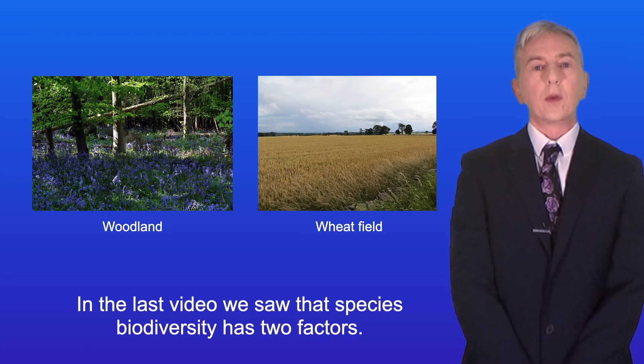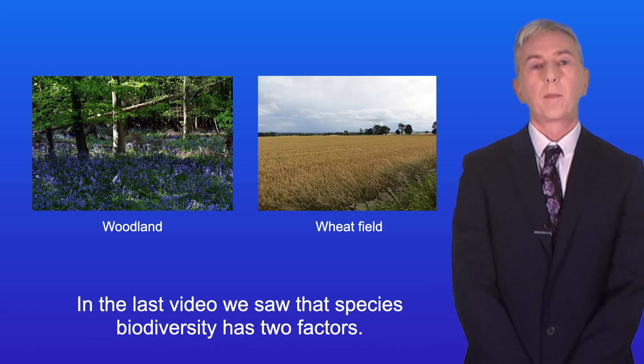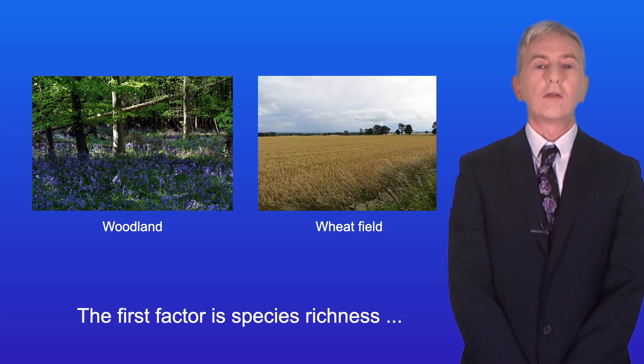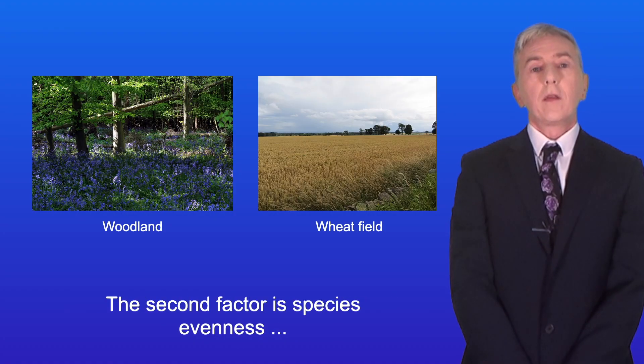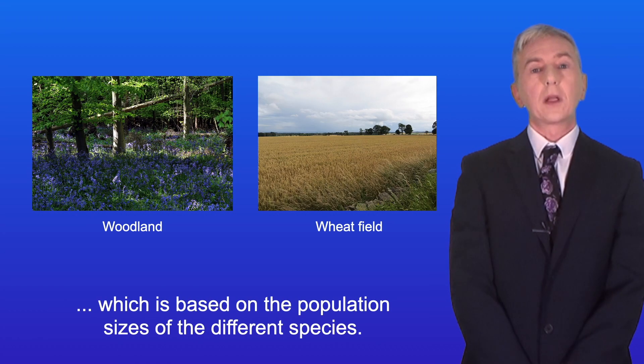Now in the last video we saw that species biodiversity has two factors. The first factor is species richness, which is based on the number of different species. The second factor is species evenness, which is based on the population sizes of the different species.